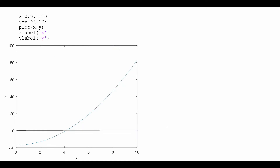We already know that the Newton-Raphson method can be used for solving both algebraic and transcendental equations. For illustration purposes I have used the function f(x) = x² - 17 = 0. So I am interested in finding out the root of this equation. Indirectly, you can see that you will find out the value of √17 if you find the roots of this equation.